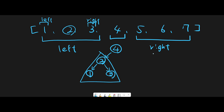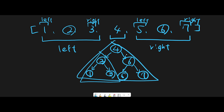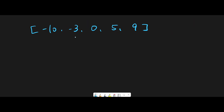We do the same thing for the right side. Pick the middle number — in this case 6 — and create a node with 6. The left side of 6 is less than 6, which means 5 is the left child and 7 is the right child. So we create nodes with 5 and 7, and then we can return this tree.